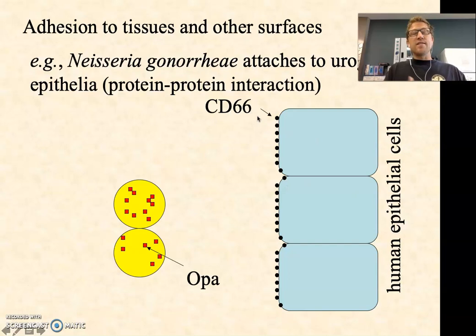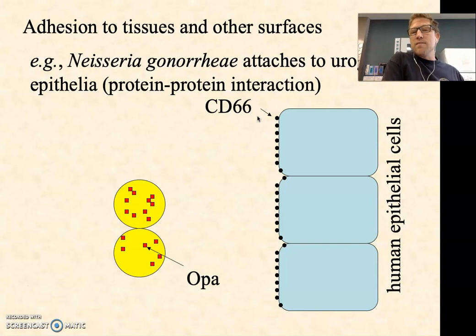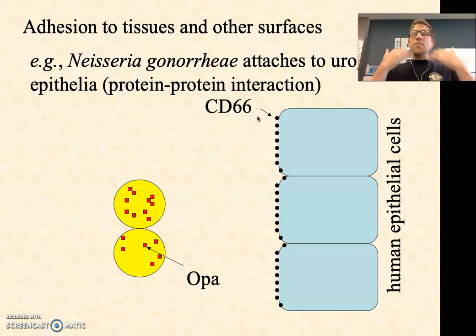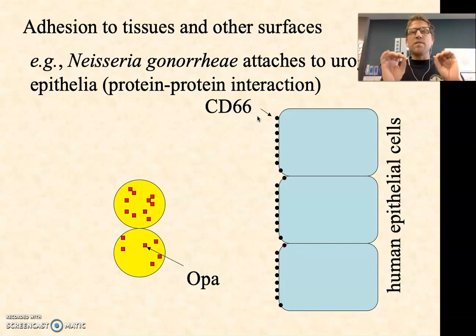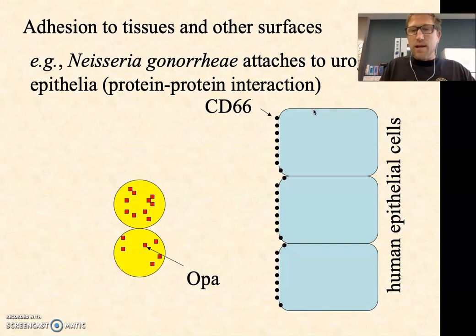CD66 is in higher abundance in the urogenital tract, so Neisseria gonorrhea, which causes gonorrhea, is more likely to attach to those CD66 proteins there. But there's also some CD66 in the upper respiratory tract, so you could have a gonorrhea infection of the upper respiratory tract — it's just less likely because there's less CD66. In addition to these specific proteins, common adhesin categories include fimbriae, flagella, and pili.